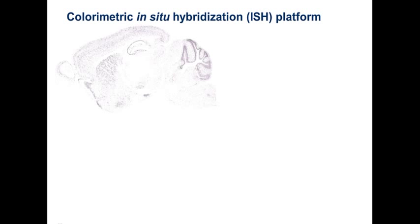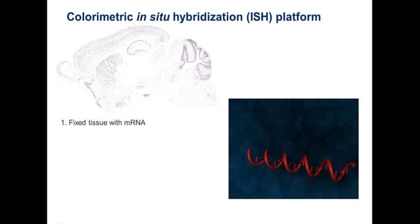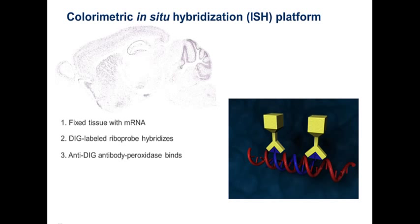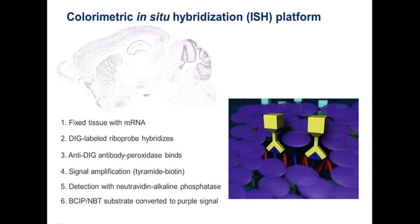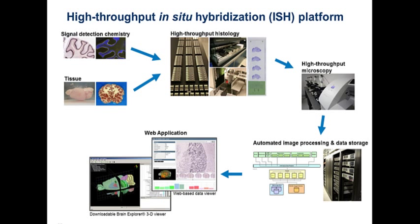In-situ hybridization is a way to measure gene expression. We fix the tissue and hybridize a labeled riboprobe. An antibody attached to a catalyst recognizes the probe, and a couple of amplification steps result in a purple precipitate. What we're known for at the Allen Institute is doing this in a high-throughput manner — we run thousands of slides a week to look at many different genes and many different structures. Our microscopy, image processing, and data storage are all high-throughput, allowing us to digitally assay the wet brain and put it online for you to use.